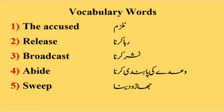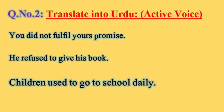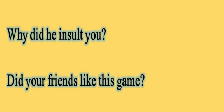Dear students, we are going to do question number two — translate into English active voice. First, the vocabulary words: 'the accused' meaning mulzim, 'release' meaning raha karna, 'broadcast' meaning nashar karna, 'abide' meaning wadi ki paabandi karna, 'sweep' meaning jhaadu dhona. We write these in the notebook before starting the sentences. Sentences: You did not fulfill your promise. He refused to give his book. Children used to go to school daily. Why did he insult you? Did your friends like this game?